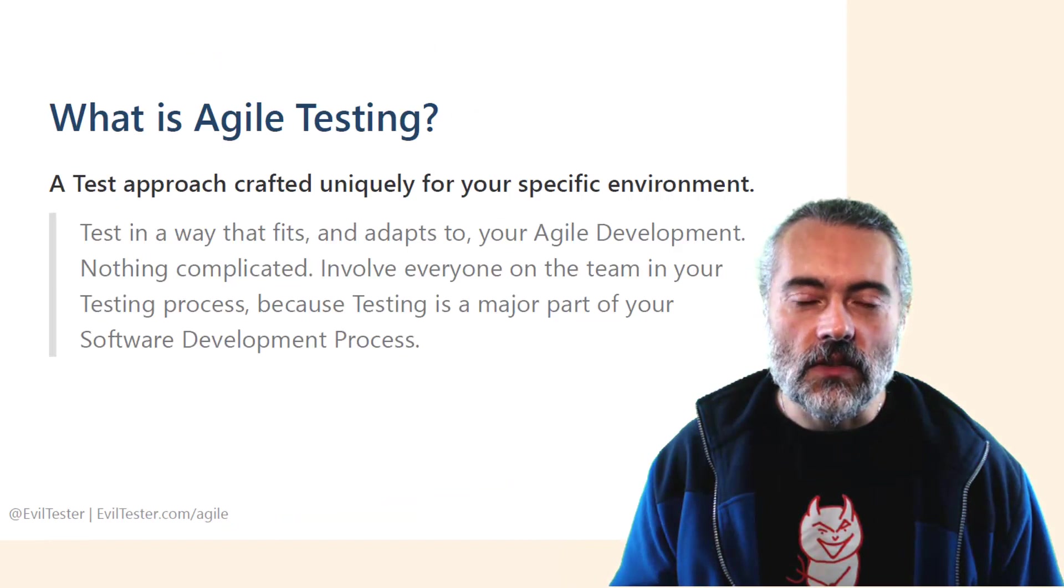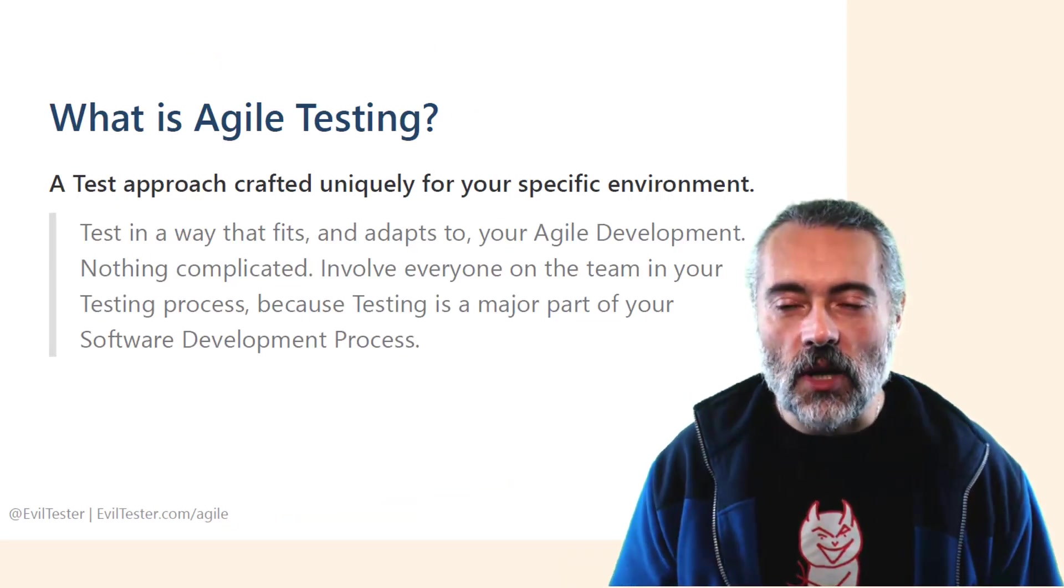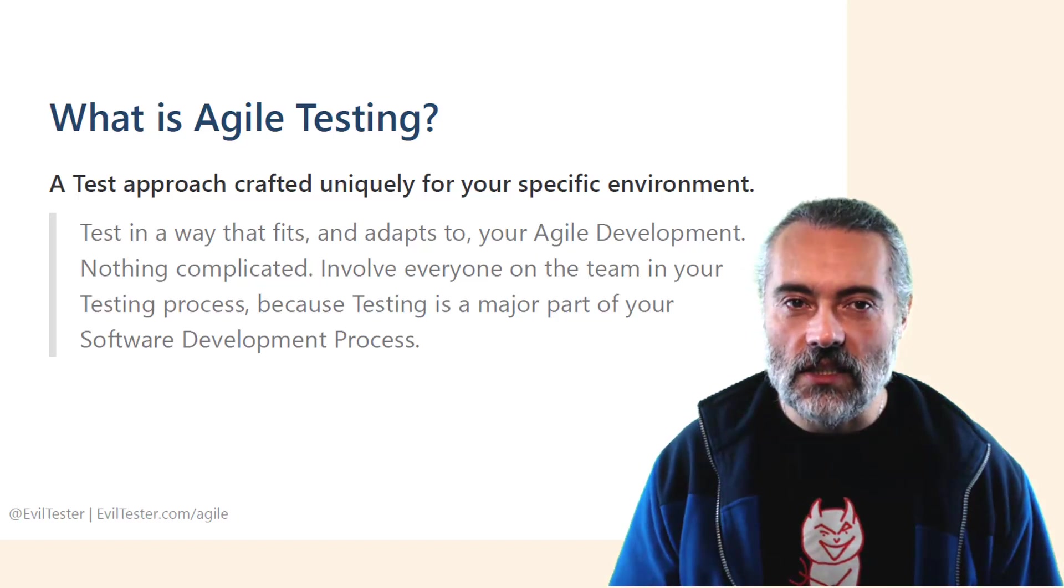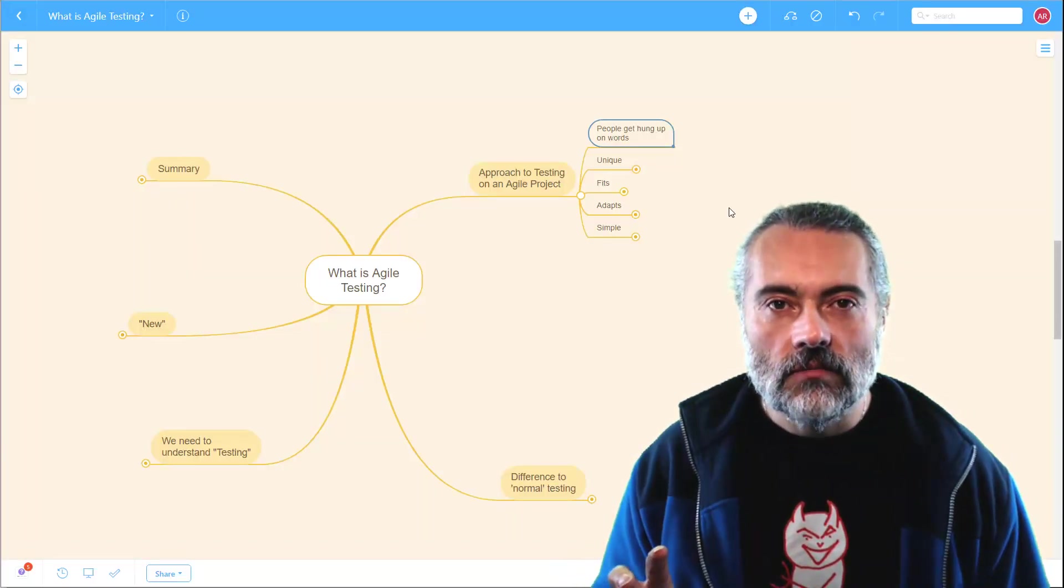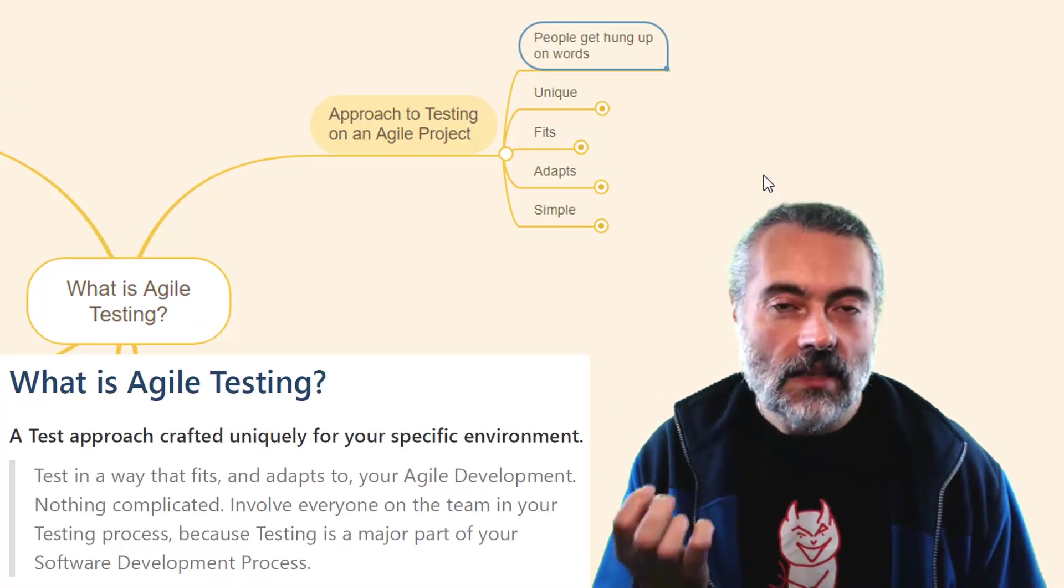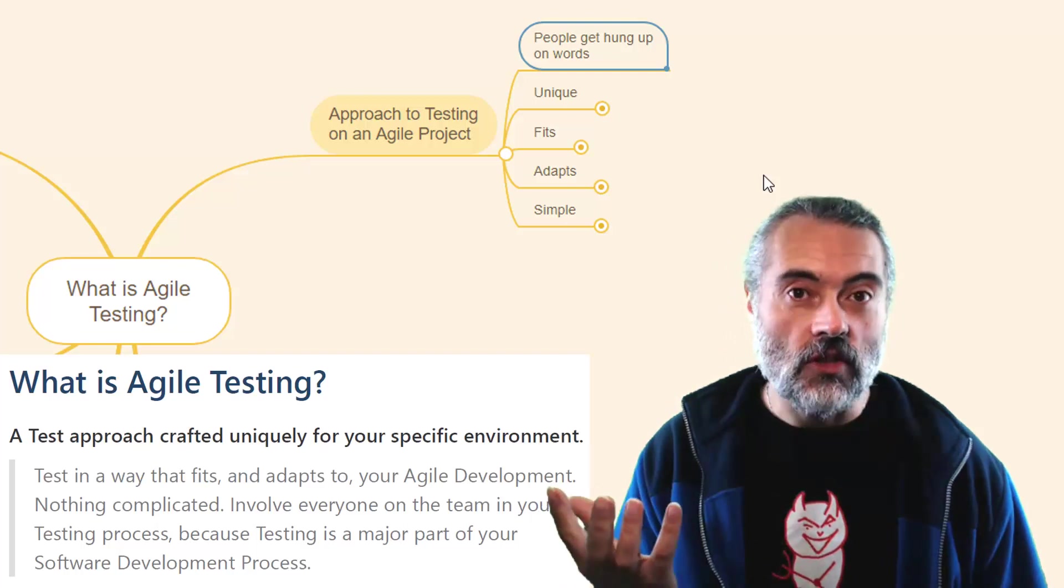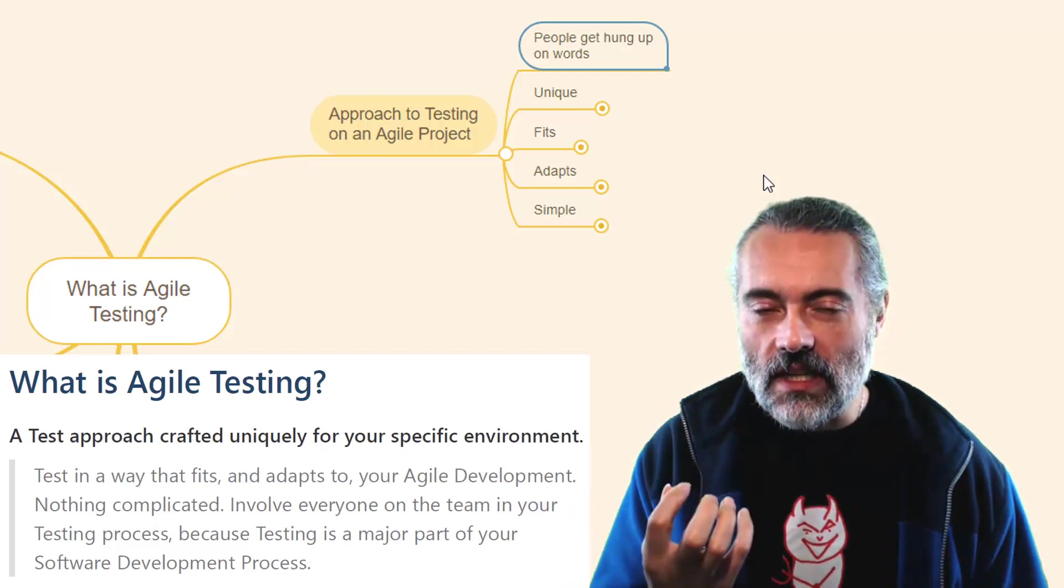Now people get hung up on this. For some reason, they make it very complicated. I'm going to get a mind map up, and we're going to use that to discuss this a little bit. One thing that Agile testing is not is a noun. So when we say, what is Agile testing? It's not a thing. You can't buy a bunch of Agile testing.